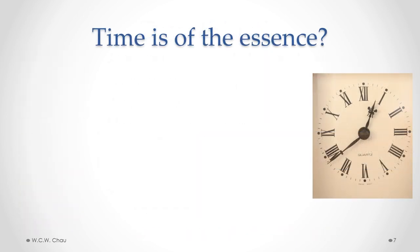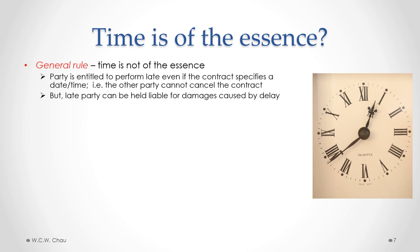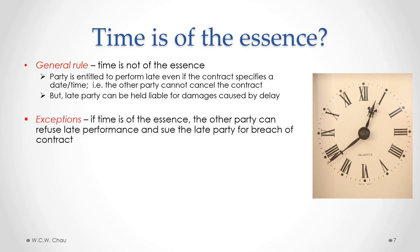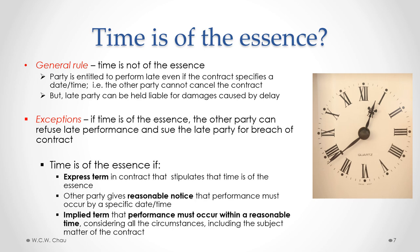To help answer those questions, let's look at the concept of 'time of the essence.' The general rule under a contract is that time is not of the essence, meaning a party is entitled to perform the contract late even if the contract specifies a specific date or time. The consequence is that if one party is late in performing, the other party does not have a right to cancel the contract. However, the late party can be held liable for damages caused by that delay. The exception is where time is of the essence — then the other party can refuse the late performance and sue for breach of contract.